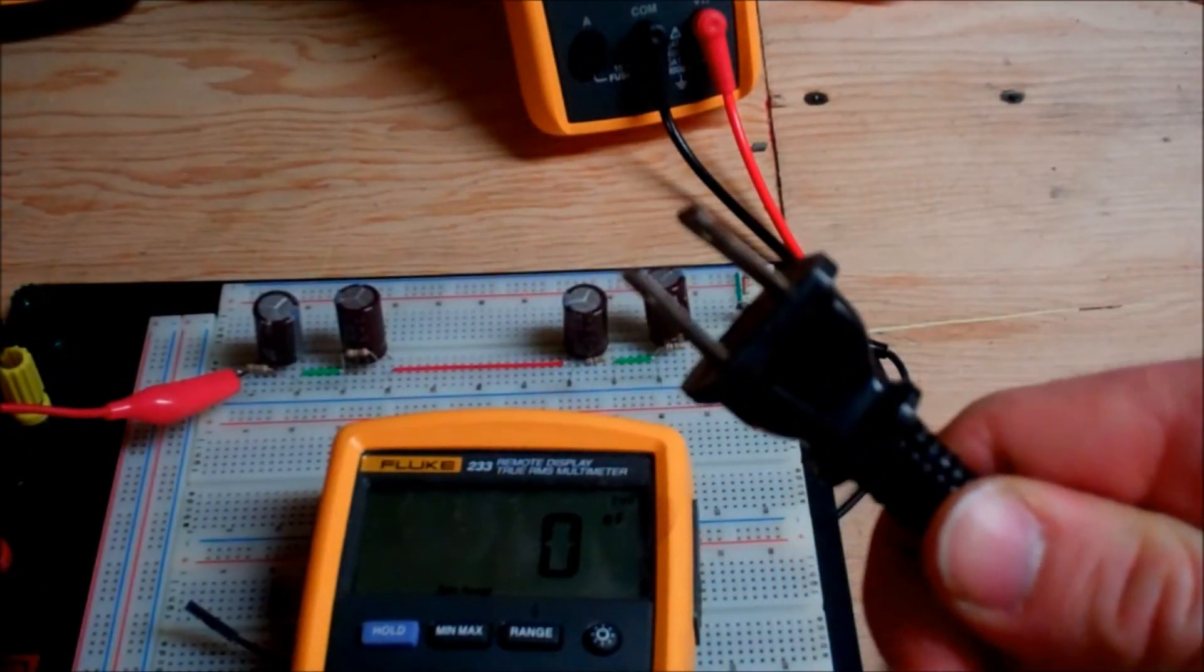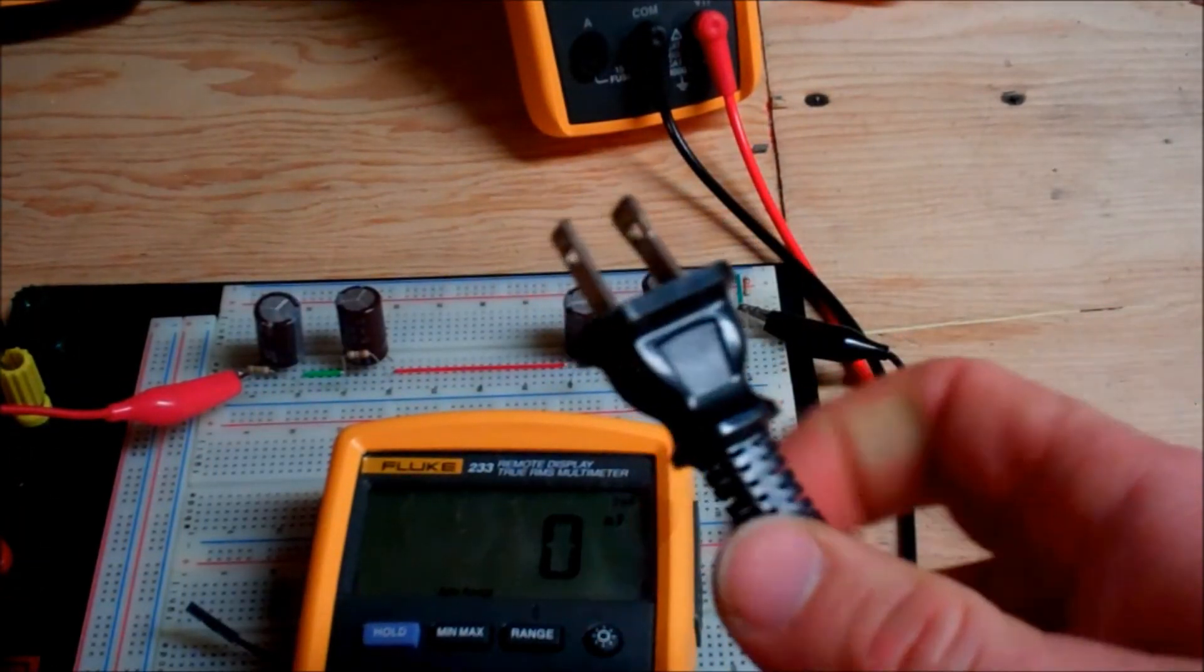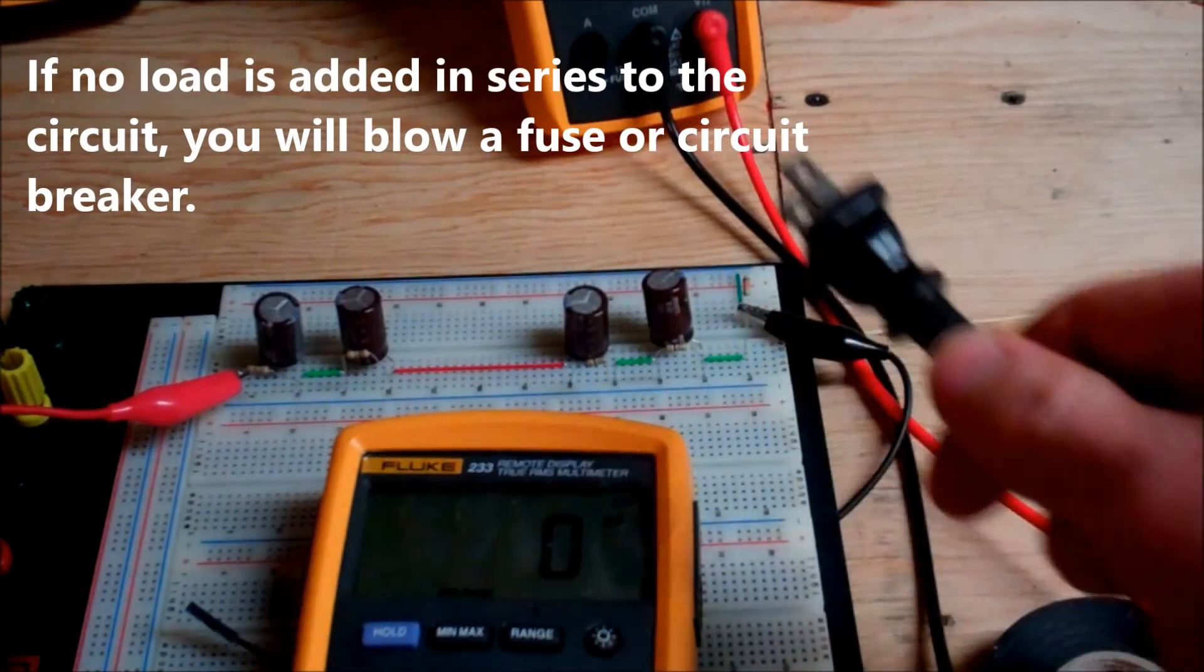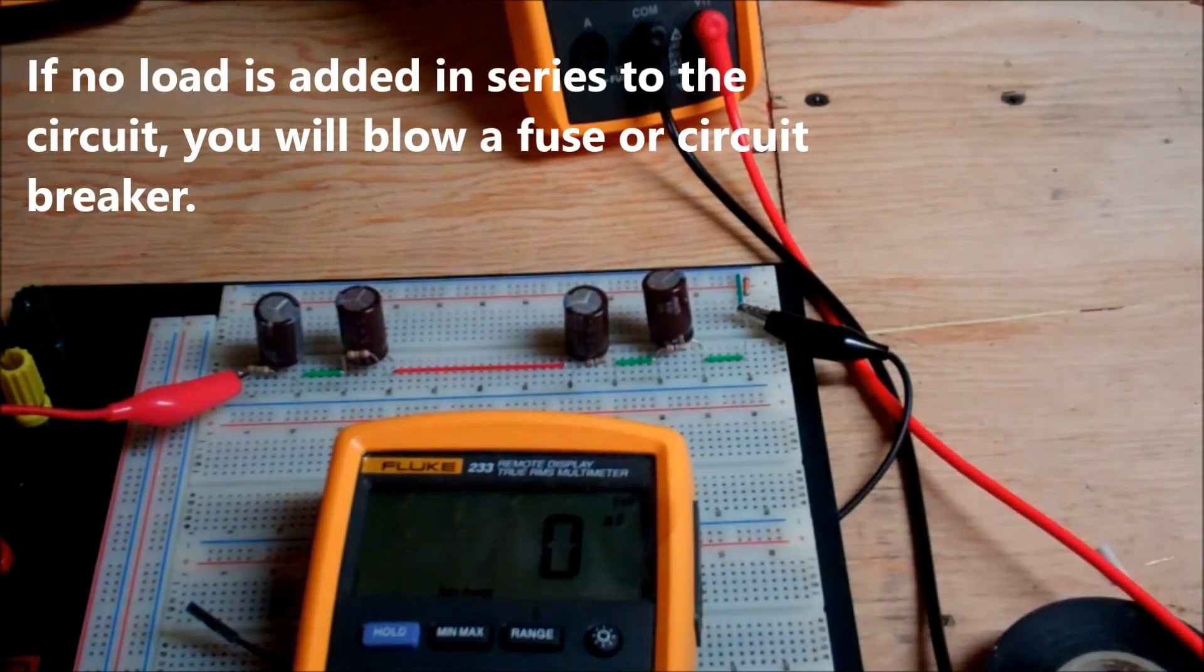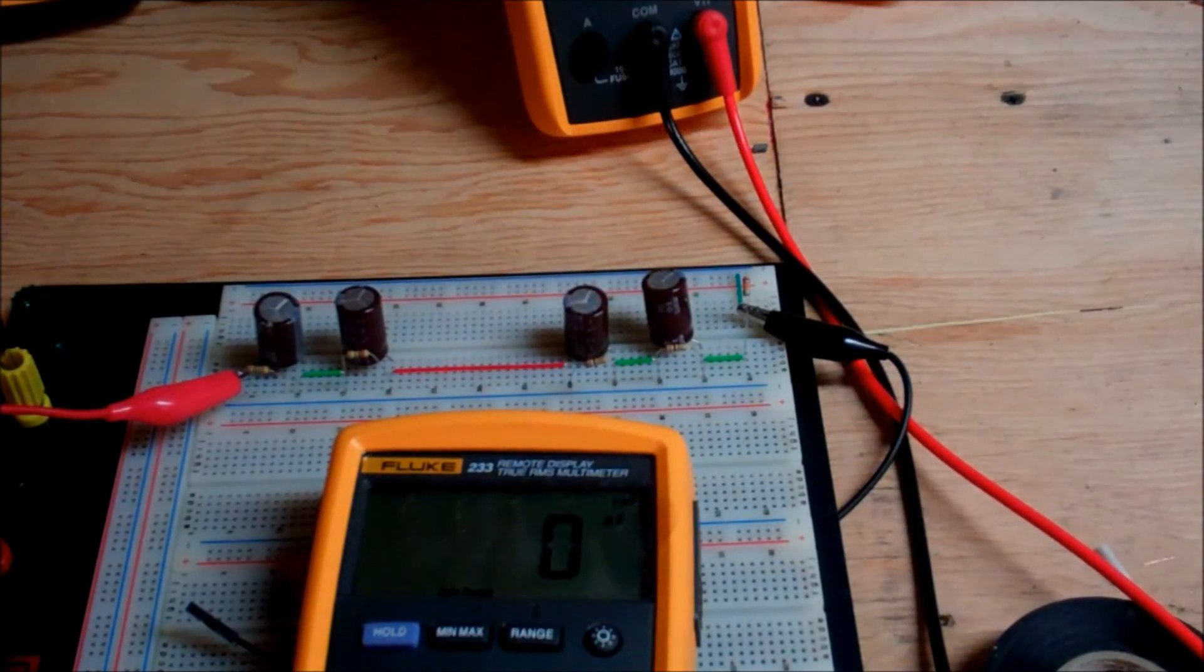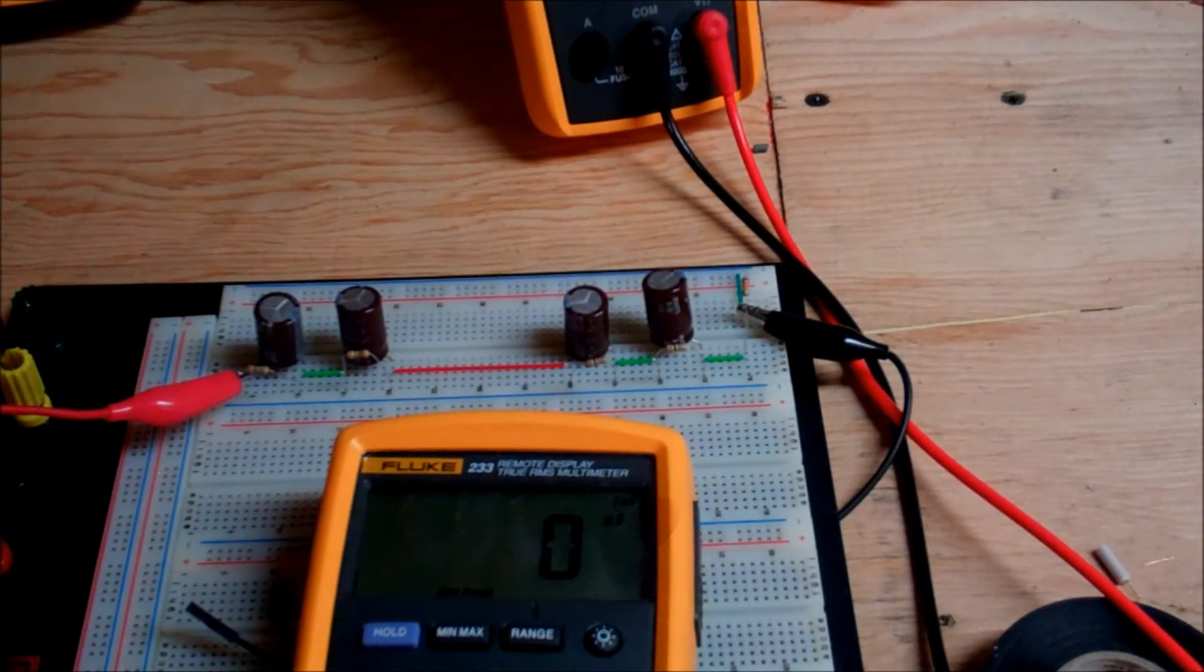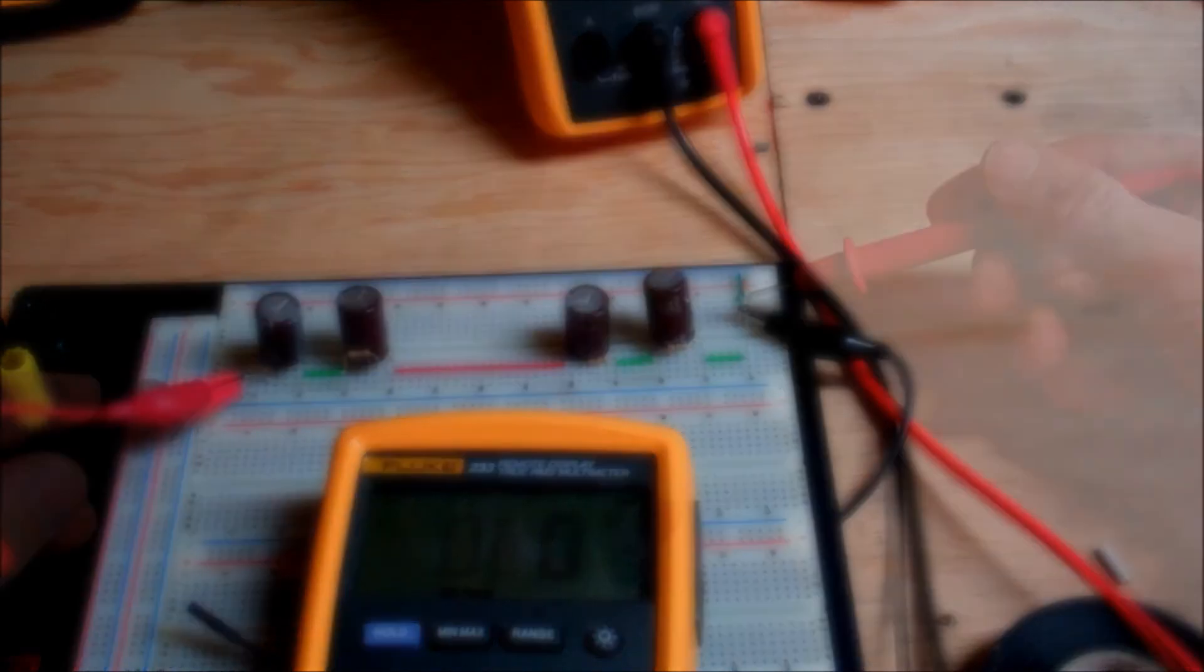Now before I plug the circuit in, I just want to remind you: safety first. Wear your safety goggles and all that fun stuff when you're working with this at home. And you have to have a load added onto the circuit. Because capacitors act like a short in an AC circuit, you have to take that into account. So what I have here is a resistor that's going to be restricting the total current flow to the circuit. So let's plug it in and see if it holds up.